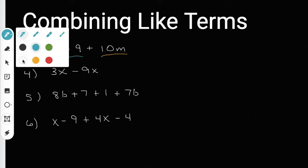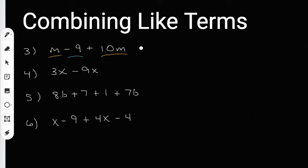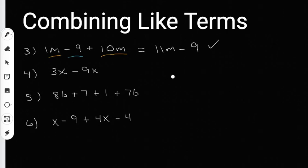The yellow terms are going to go together. They're going to add together to give me one M plus 10 M. One M plus 10 M is going to give me 11 M. Those two terms combine because I'm adding them together — I add the numbers out in front. And then the negative nine underlined in blue, I'm just going to bring that over to my final answer. So I'm going to get 11 M minus nine.